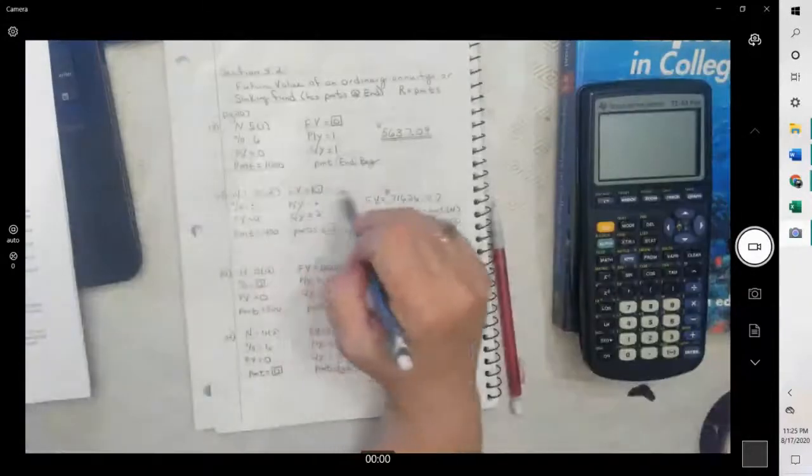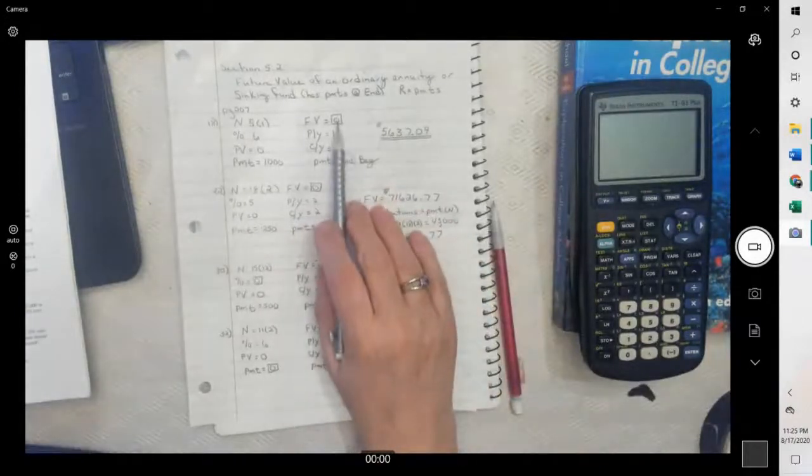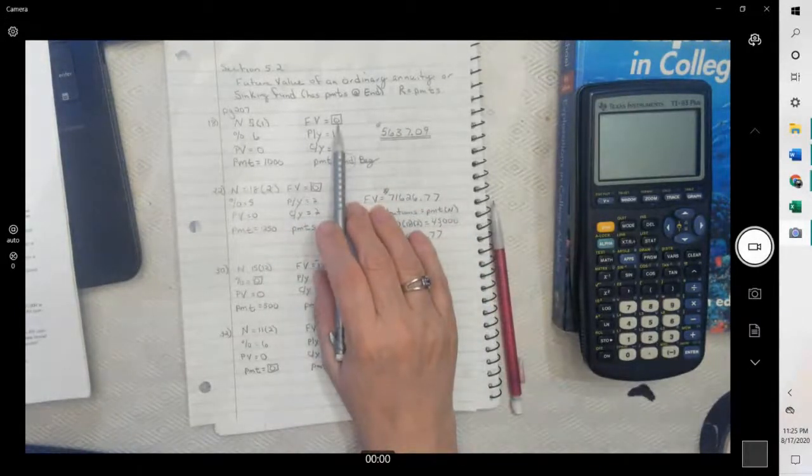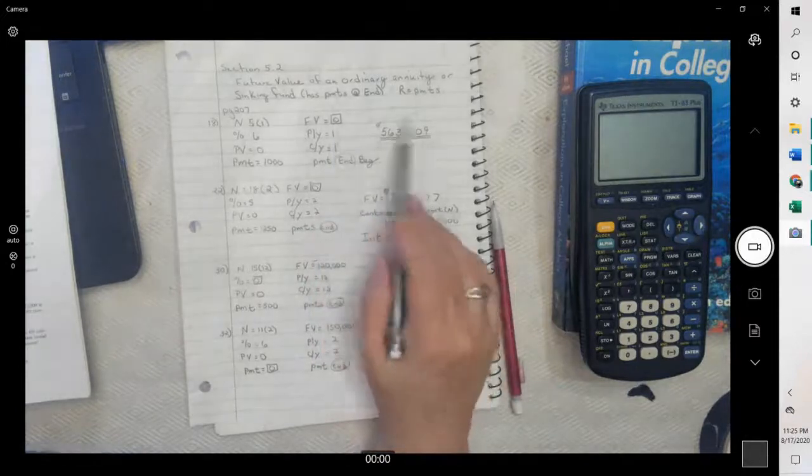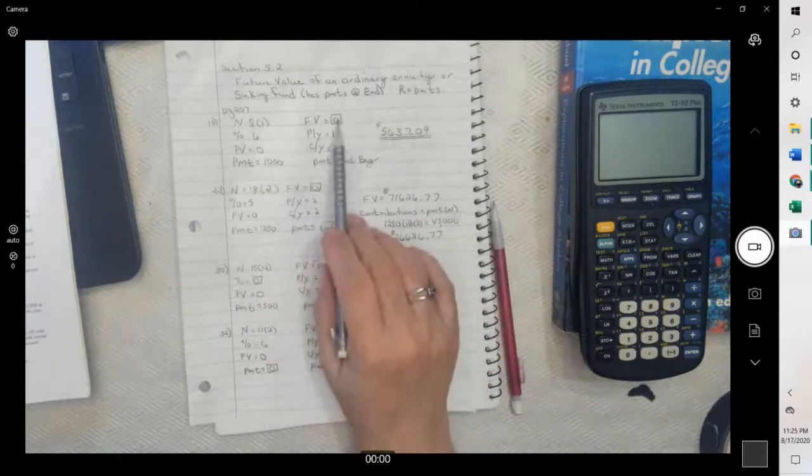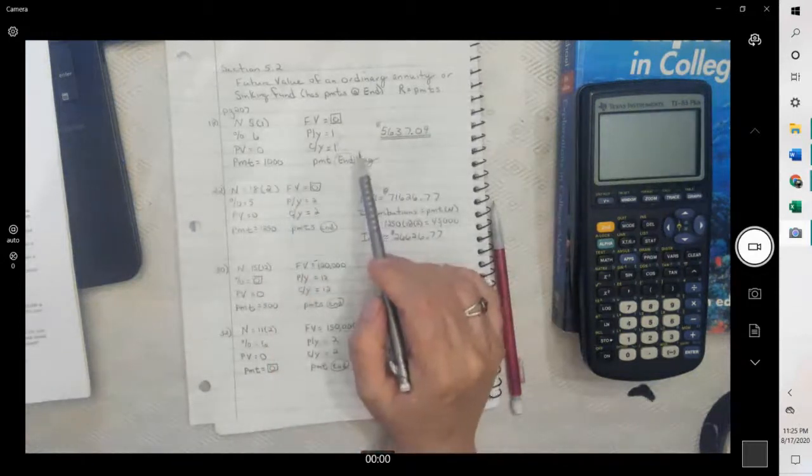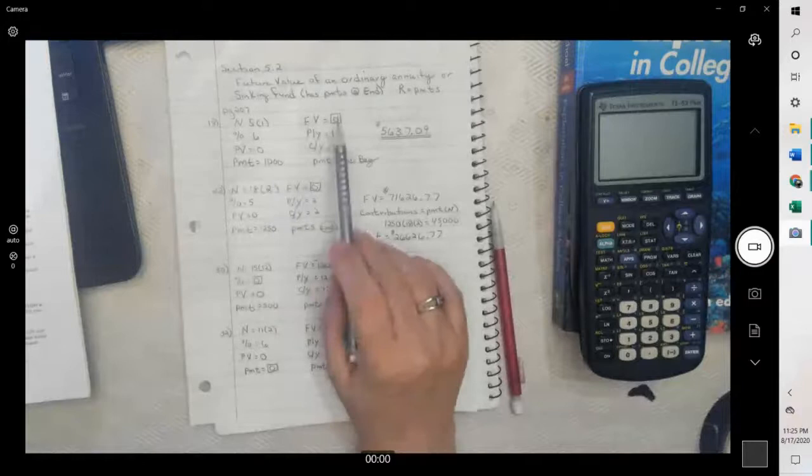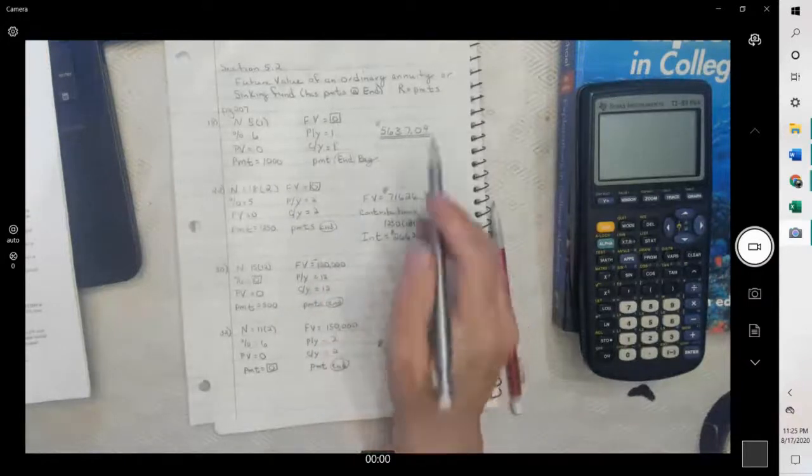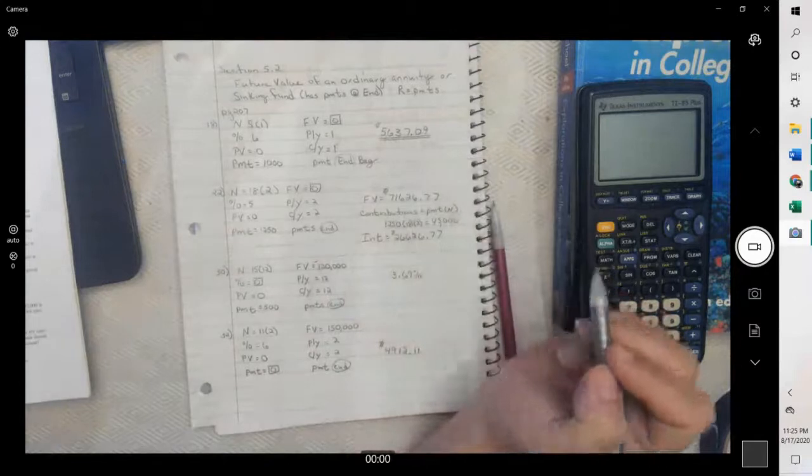So if we plug all of this in our calculator, and then you go up to future value and solve it, you're going to get this value. Now remember, it's going to come out negative because this is positive. We've just dropped the negative sign. One's money going in, one's money going out. So it's $5,637.